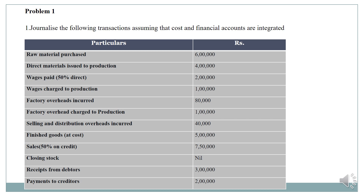Seventh transaction: selling and distribution overheads incurred. Then finished goods — finished goods account and sales: 50% credit basis — 7,50,000 rupees, and remaining 50% cash basis. Closing stock is nil. Then receipt from debtors, and payment to creditors. Now we have to record journal entries under the integrated accounting system format.